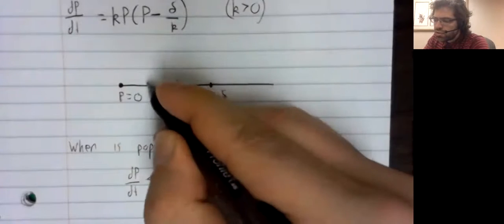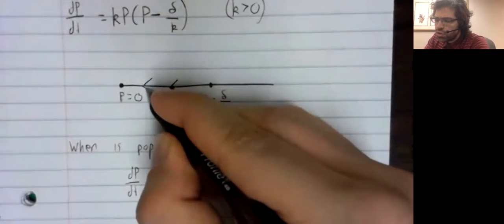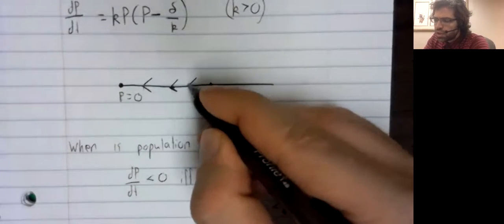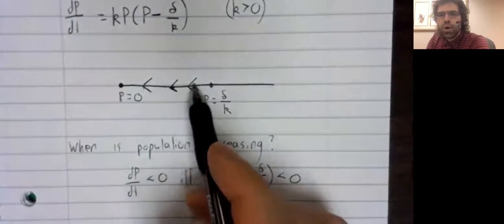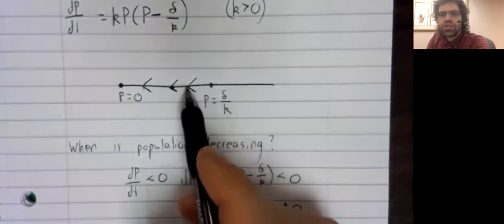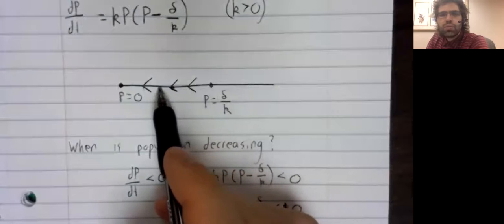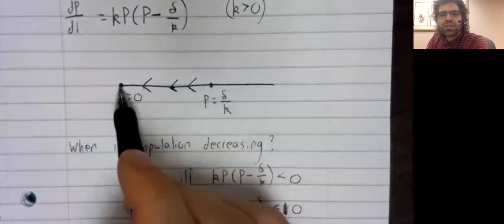So that's not good. According to this model, if we have a small initial population, the animals will go extinct.